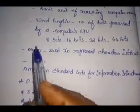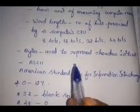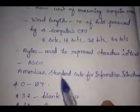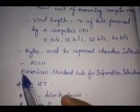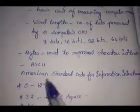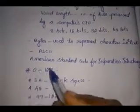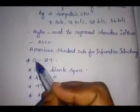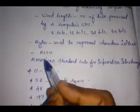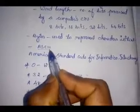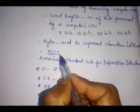A byte is used to represent a character in a text. Characters in a text include alphabets and numbers. Each character is represented by bytes. The standard character representation system is ASCII code. Each character is represented by that code — that standard coding system is ASCII code.